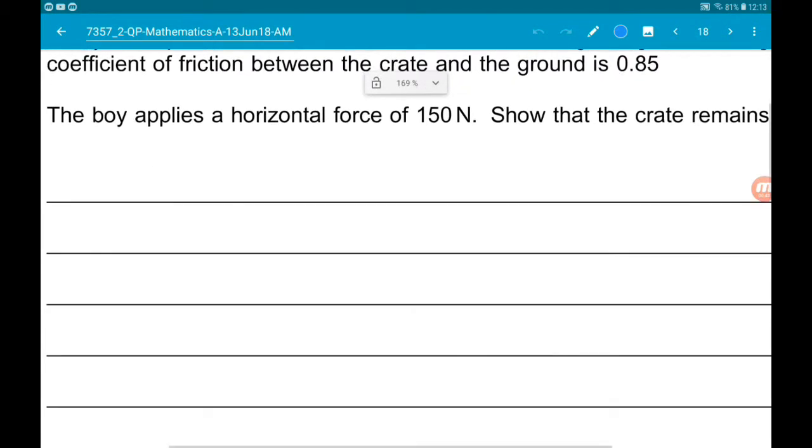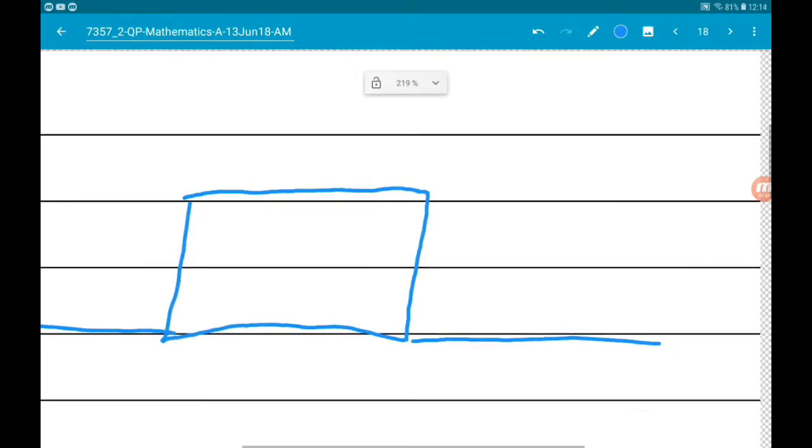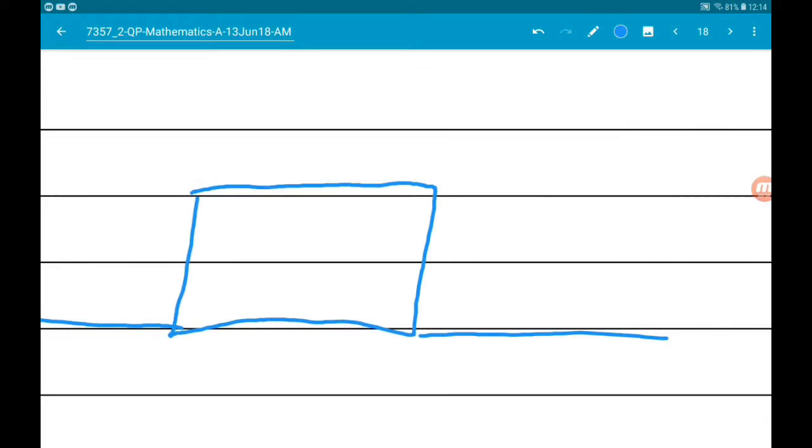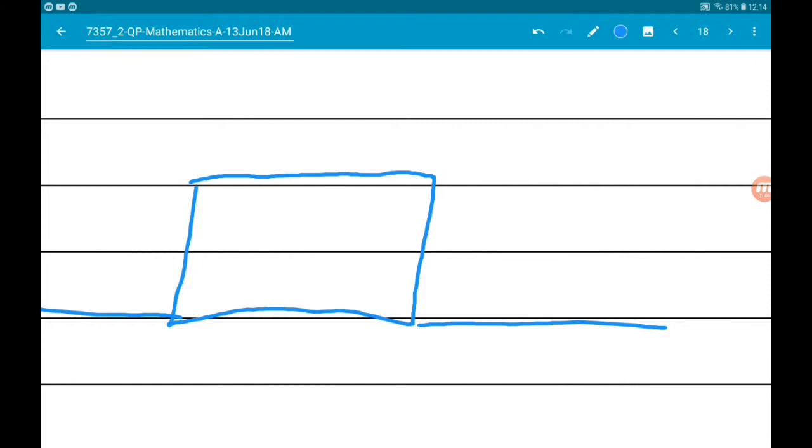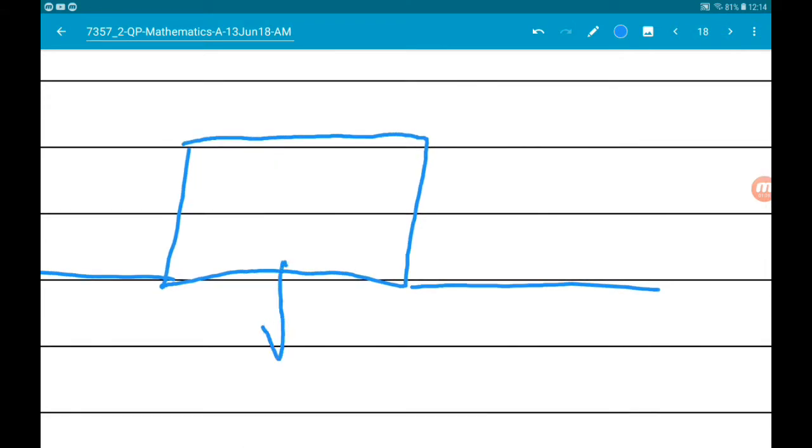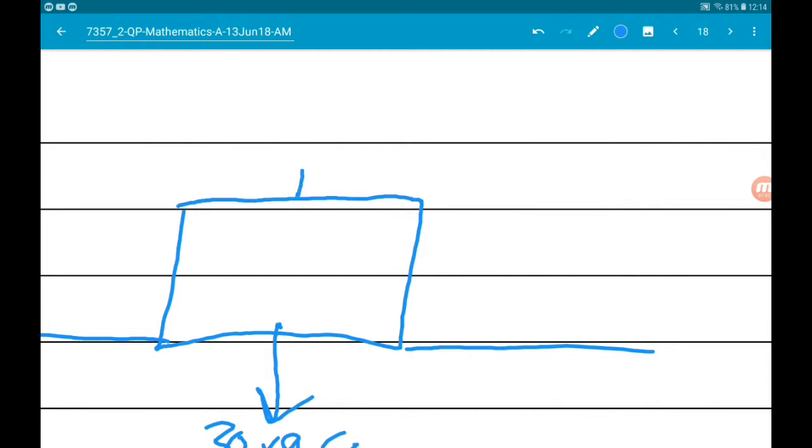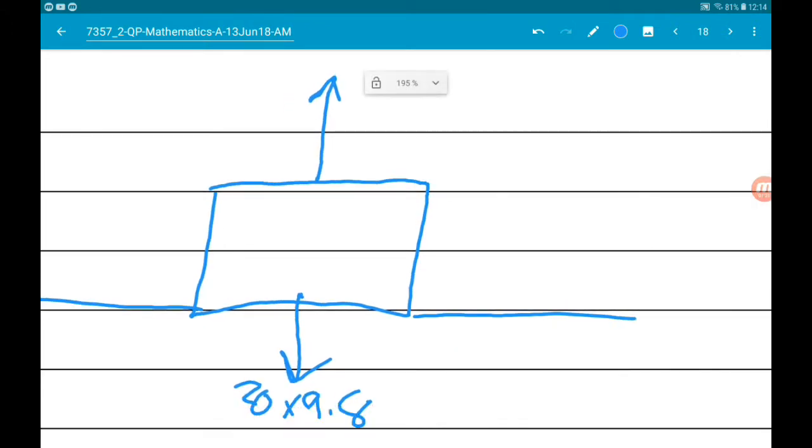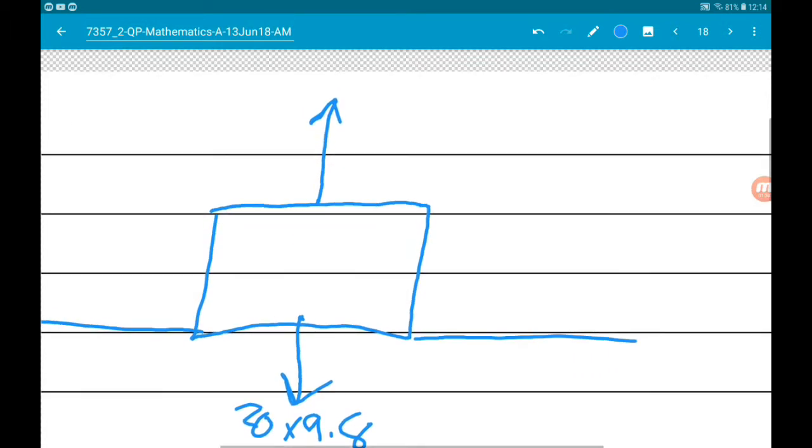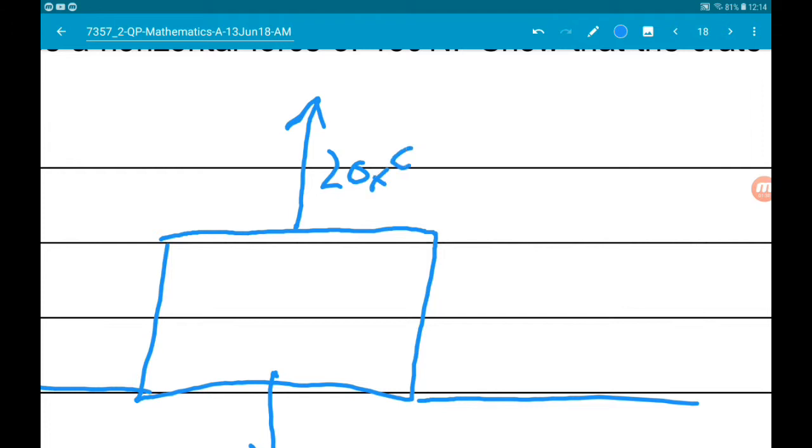Okay, let's draw a sketch. So there's our crate. There's the ground. Let's say that the boy is trying to push it from the right. And then, well, first of all, let's talk about the forces acting up and down. We know that the weight is the mass times gravity, so that's 20 times 9.8. The normal reaction force R is going to be exactly the same because the crate is not moving up or down. It's not accelerating up or down. So that's also 20 times 9.8.